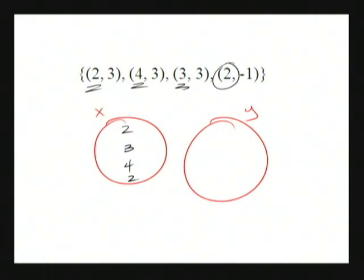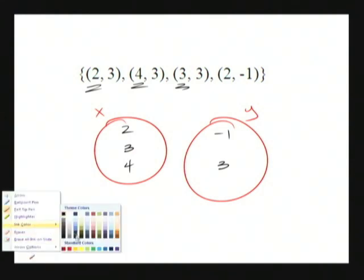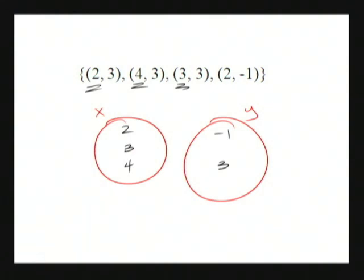So let's list the elements in the range. I see negative 1 and 3, and again, even though I see the number 3 three times, I only want to list it once. Now let's just draw the mapping out. 2 goes to 3, 4 goes to 3, 3 goes to 3. And so far it is a function. So far every element in the domain is paired with only one element in the range. But this last one is where it sends us into basically not being a function.